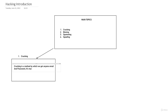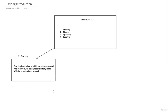Cracking is mainly used to get anyone's username, email, and password. It's mainly used to get any website account, any application account — basically any online website or application account so that we can use it. So cracking is a method by which we can get anyone's email and password, and using that email and password we can log into the application or website, like Netflix.